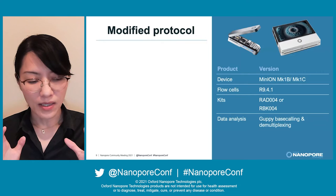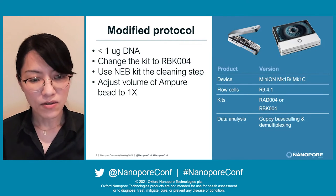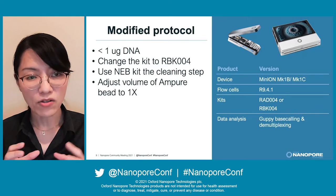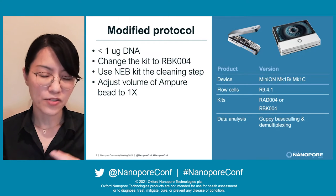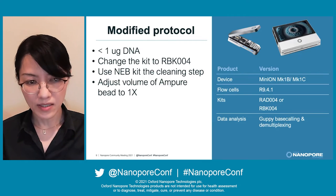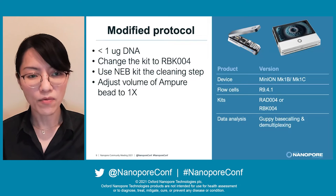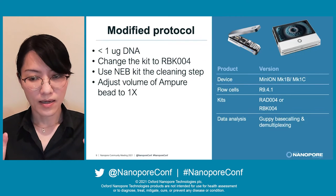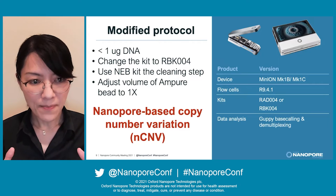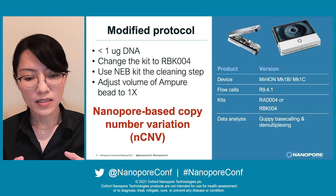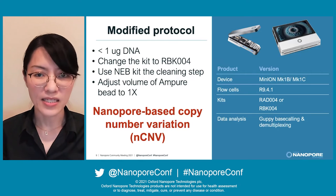I did not follow the protocol exactly as published. I reduced the amount of DNA from the original 3 micrograms — I tried 700 nanograms — and changed the kit and adjusted the volume of AMPure beads to save cost. I also renamed the method to nanopore-based copy number variation, or NCNV, because it is more straightforward when talking with collaborators.